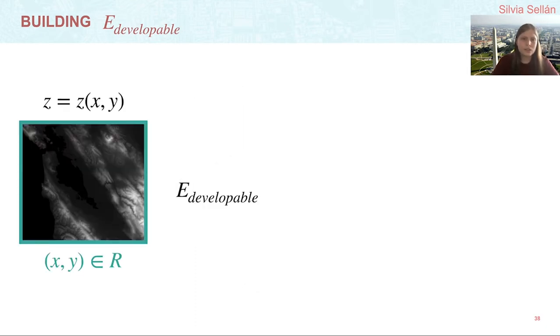This already gives us a good candidate for a developability energy. Something we can do is integrate the rank of this Hessian everywhere in R. You can think of this integral as a double integral in x and y for the simple square domain R. However, the rank is not a convex function, and we would prefer that our energy involves only convex functions so that we can guarantee that it has a unique minimum and that we can minimize it using convex optimization techniques.